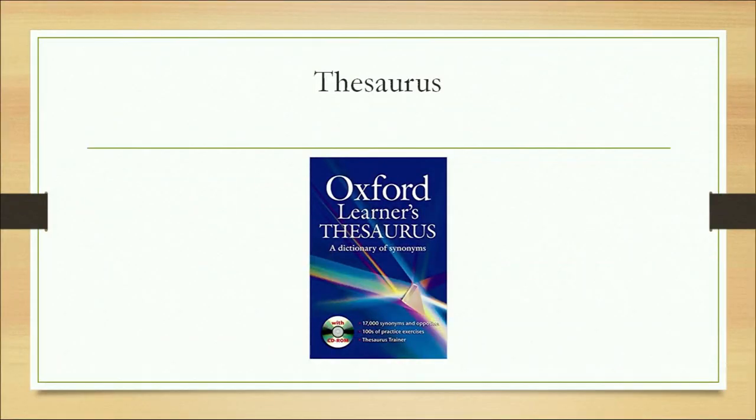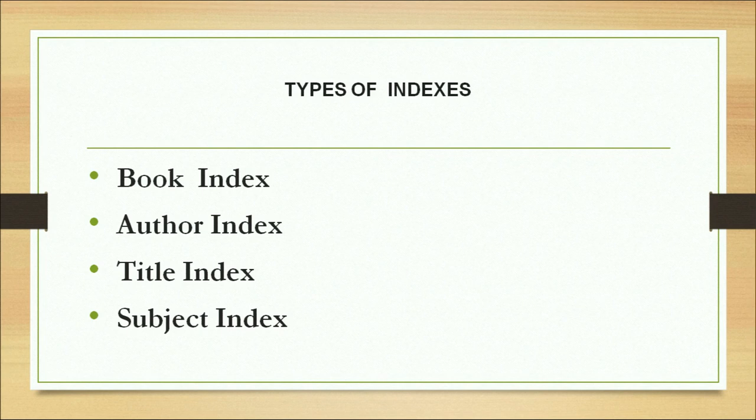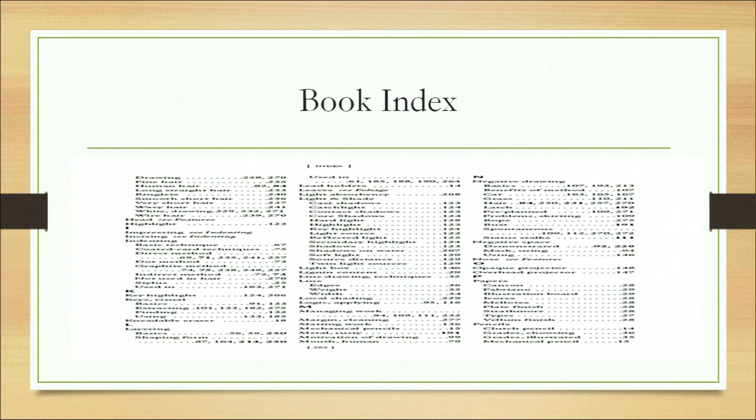The Oxford Learner's Thesaurus is an example learners may have used. There are also different types of indexes: book index, author index, title index, and subject index. The index at the end of a book does not include all terms in the book — it only lists important keywords covered in the book. It does not cover stop words like 'of', 'in', or 'the'. Keywords are the important concepts covered in the book.